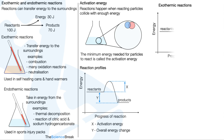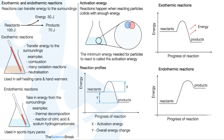For exothermic reactions, energy is transferred to the surroundings — that's what the reaction profile looks like. For an endothermic reaction, the products energy line is higher than the energy of the reactants, and in this case the energy has been taken in from the surroundings. It's also worth labeling the parts: activation energy x is shown by that line, and the overall energy change y is shown between the reactants and the products.